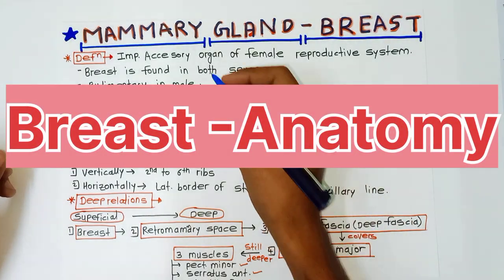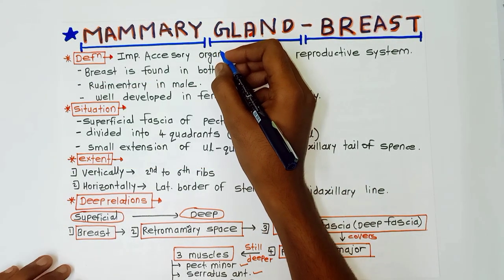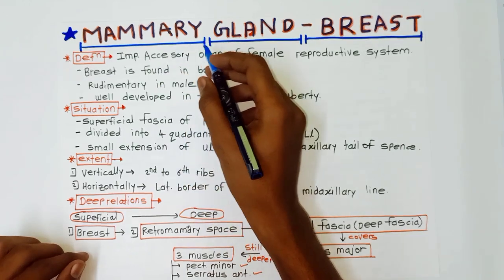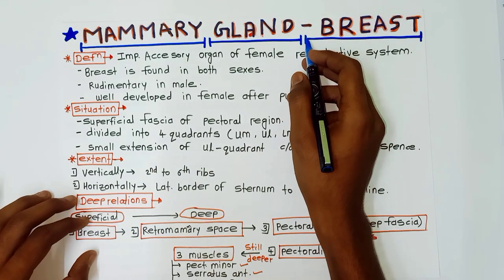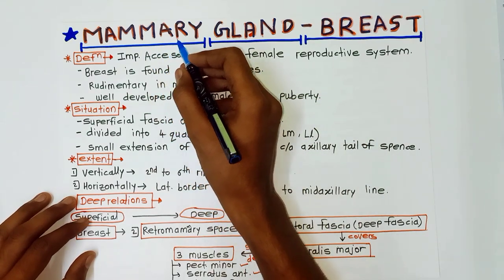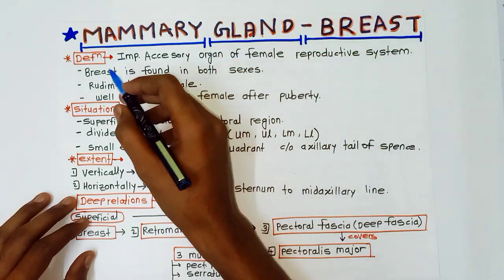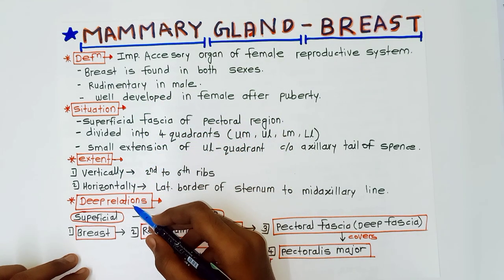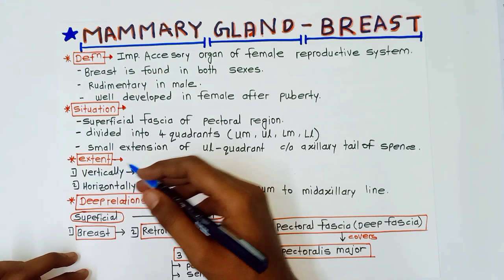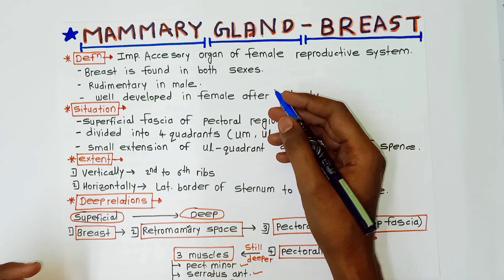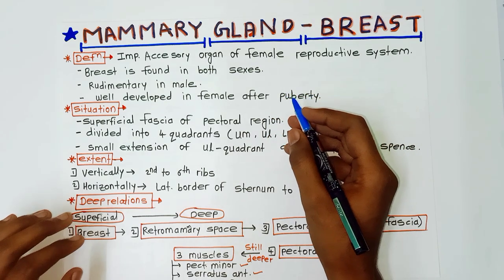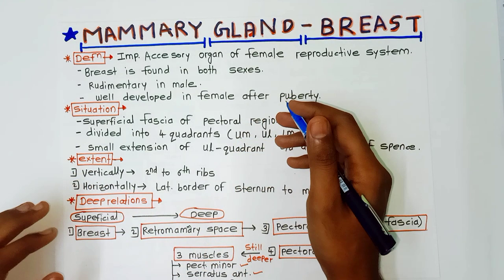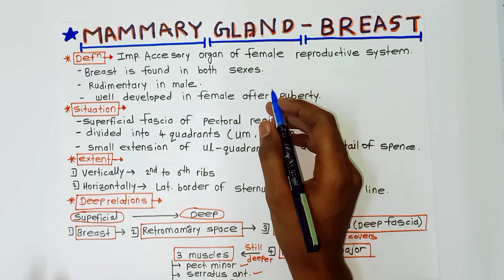Hello guys, I am Sudarshan, I am a third year MBBS student, and today's topic is mammary gland or breast anatomy. This is a first year video. The questions asked in your exam regarding this mammary gland or breast include definition, situation, extent of the breast, its deep relations, blood supply, and lymphatic drainage, which is the most important point. I have covered all these points in this video, so watch till the end and do subscribe to my channel.